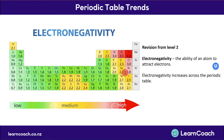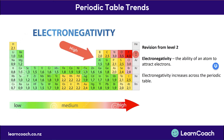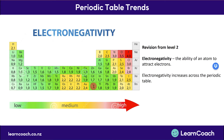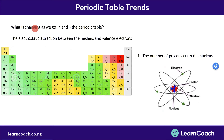Electronegativity increases across the periodic table — on this side there is low electronegativity, and on this side there is high electronegativity. You might also notice that electronegativity is highest at the top of the table and then decreases as you go further down. So we know that's the trend in electronegativity, but why? What is changing as we go along and down the periodic table?